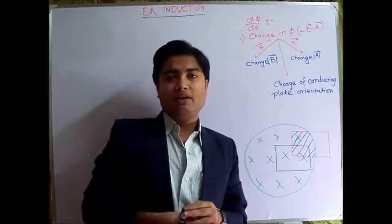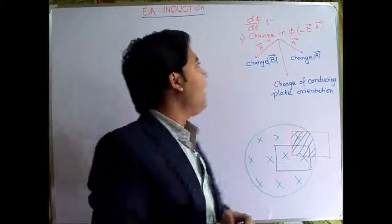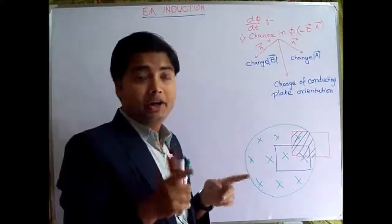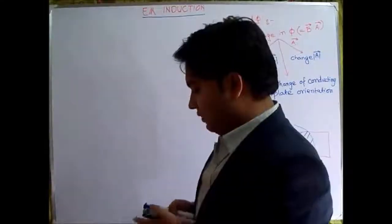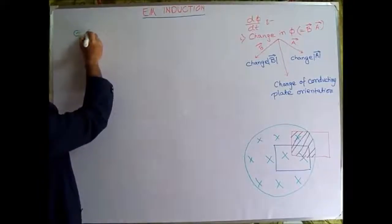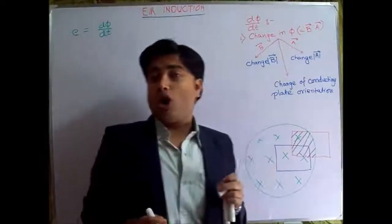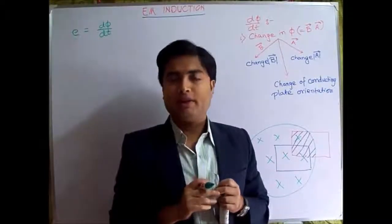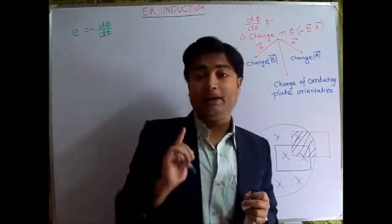There are three ways to change phi, the magnetic flux. Whenever we change this magnetic flux, an EMF is surely induced within the copper sheet or conducting sheet. The induced EMF will be E = -d(phi)/dt. From Lenz's law, the direction of the induced EMF will be such that it opposes the change that is producing it — hence the negative sign.